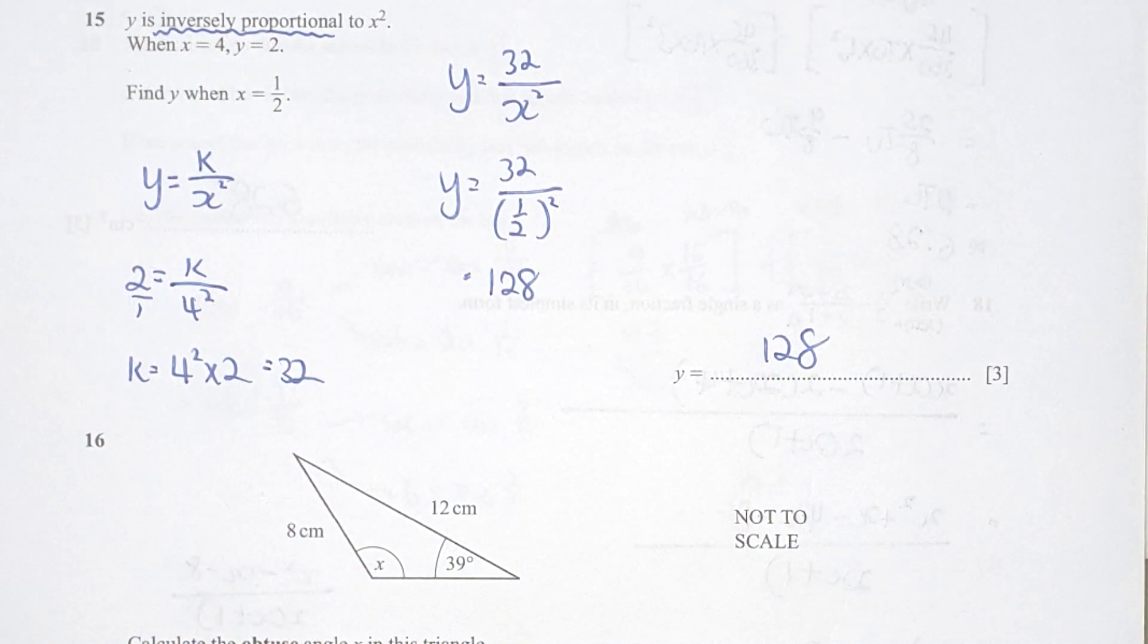Question 15, keyword here is inversely. So y equals to k over x square. So substitute 4 and 2 into respective space. And we run the arrangement. You should get your k as 32. And the k here is actually a scale factor. So y equals to 32 over x square. This is your actual formula. So substitute x equals to 1 over 2 into it. You should run the calculation and get 128 as your final results.